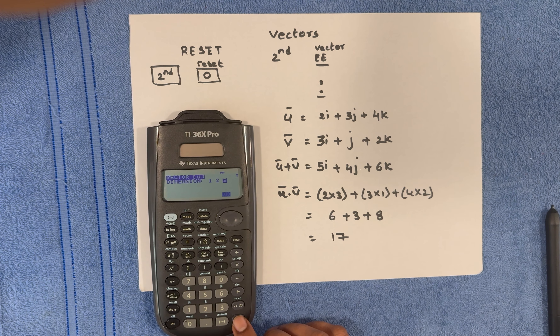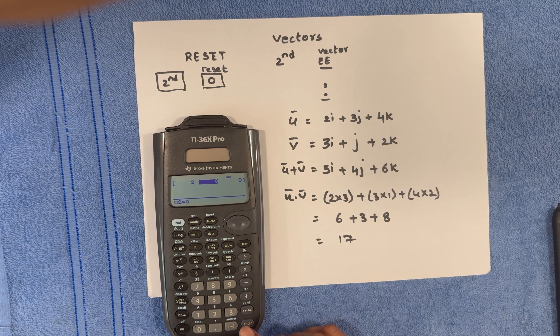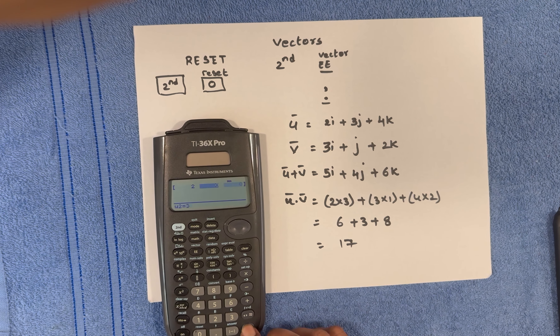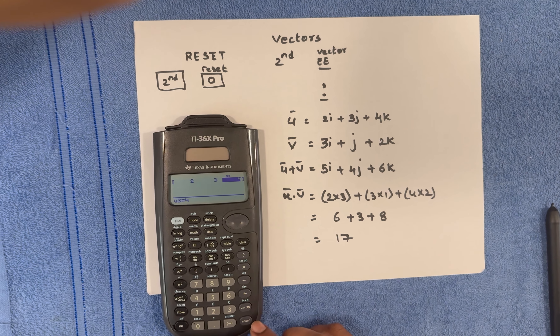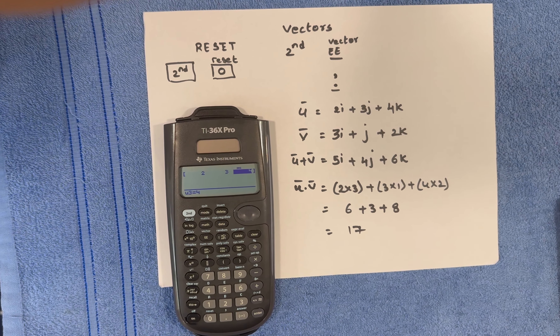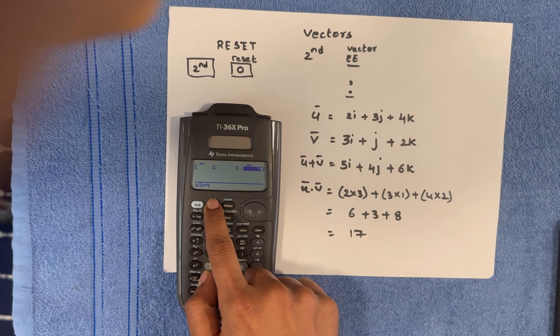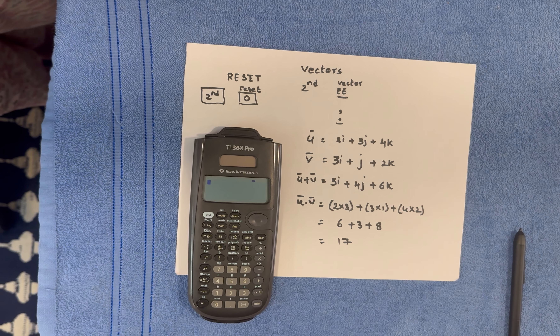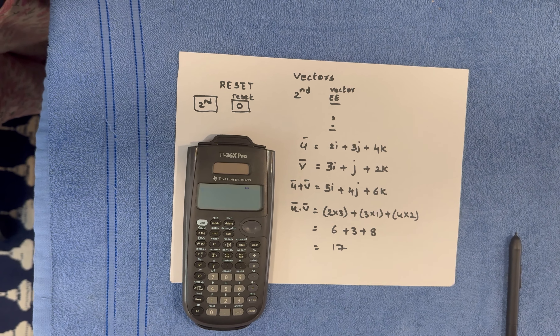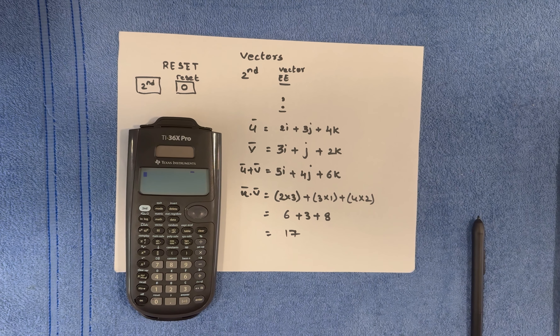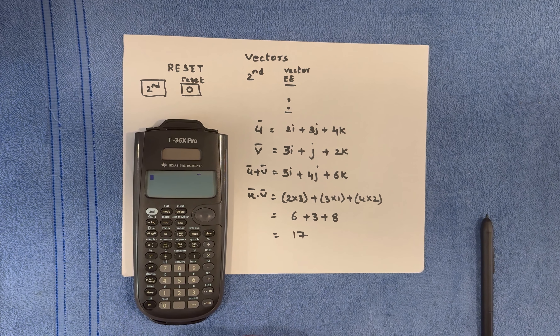Now enter the coefficient values of i, j, and k, which are 2, 3, and 4. Enter 2 and hit Enter — it automatically moves to the next field. Then enter 3, hit Enter, then 4, and hit Enter. To exit the screen, hit the second button then Quit to return to the home screen. All your values are stored in memory.